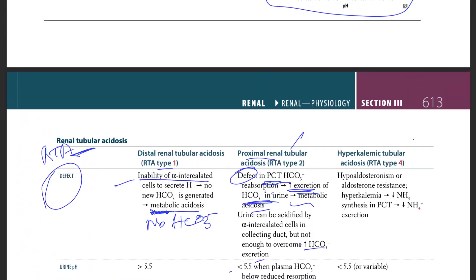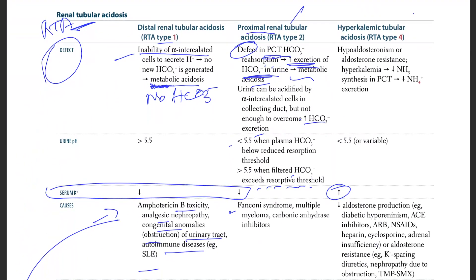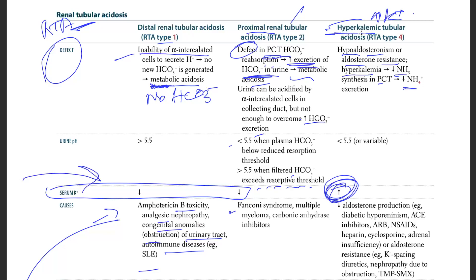In RTA type 4, hypoaldosteronism or aldosterone resistance causes hyperkalemia, leading to decreased NH3 synthesis in the PCT and decreased NH4 excretion. This type is called hyperkalemic tubular acidosis — the name tells you there is more potassium, whereas in types 1 and 2 we have decreased potassium.